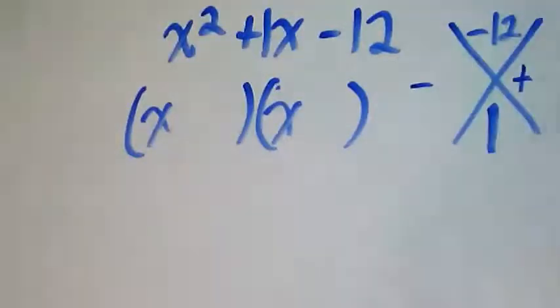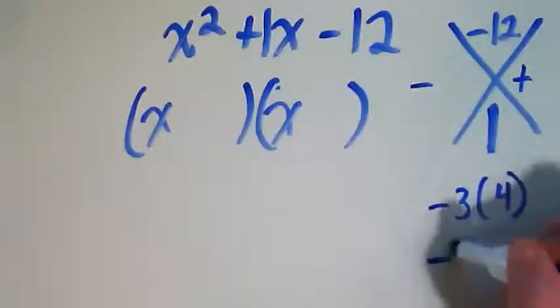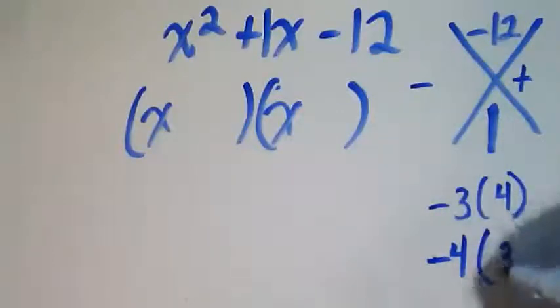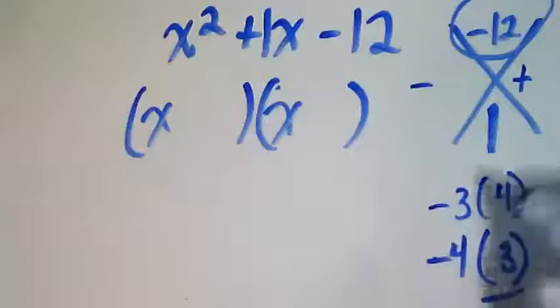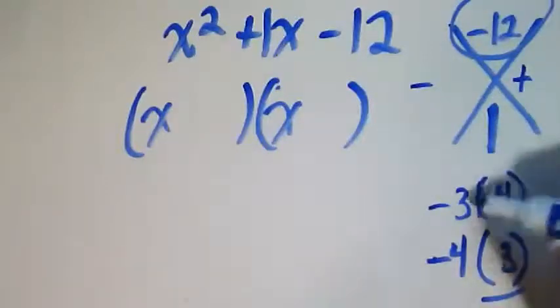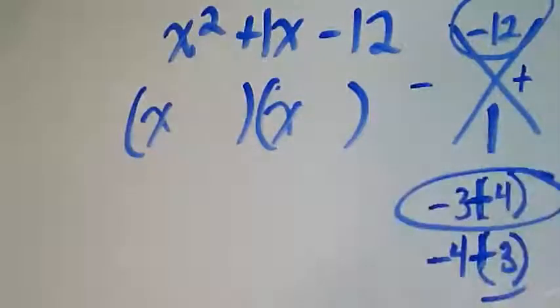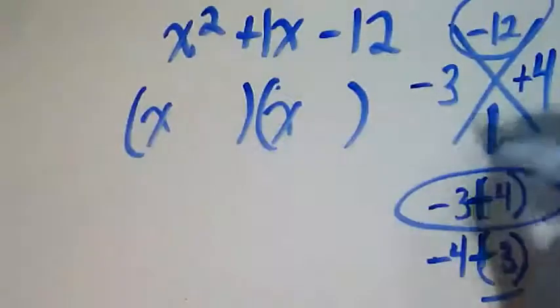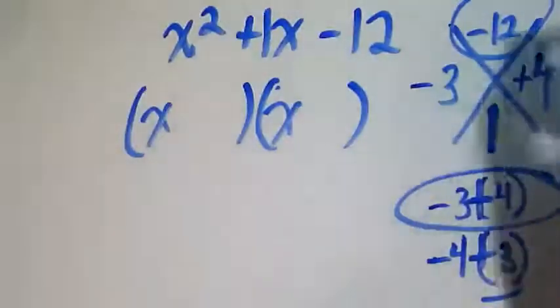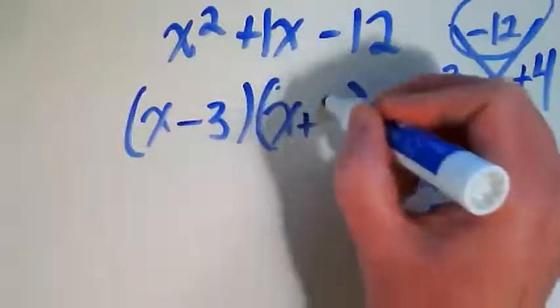Now the question is, is it negative 3 times positive 4, or is it negative 4 times positive 3? Both of those are going to get me to this negative 12. But which one of these, when I change these for multiplication to addition, is going to get me to a positive 1? And it's this one. Negative 3, positive 4. When I add them together, I get positive 1. When I multiply them together, I get negative 12. So this is negative 3, positive 4.